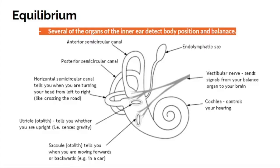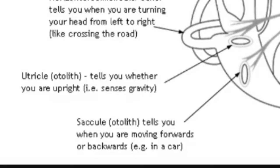The cochlea controls your hearing. The utricle, or otolith, tells you whether you are upright — for instance, it senses gravity. The saccule, or otolith, tells you when you are moving forward or backward.